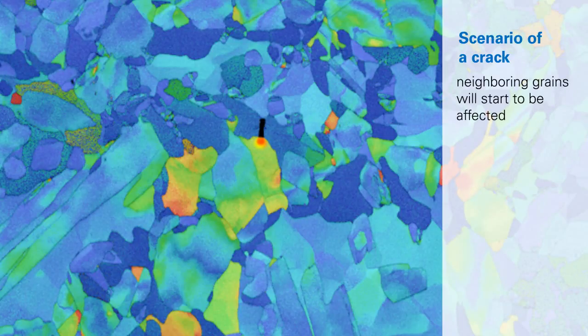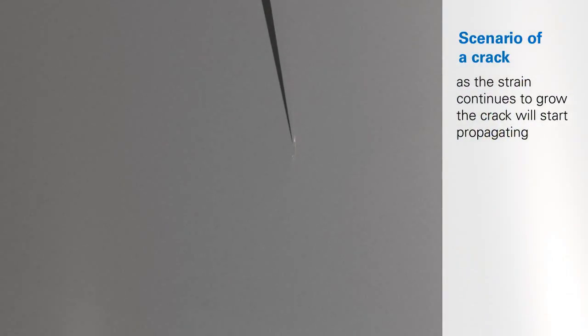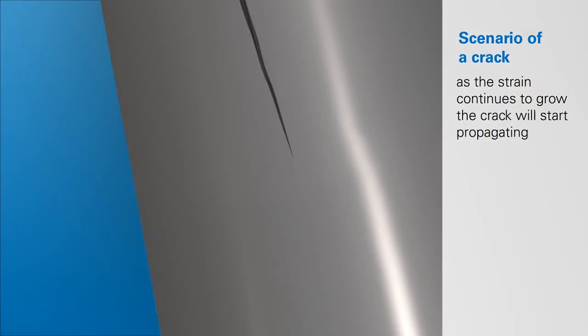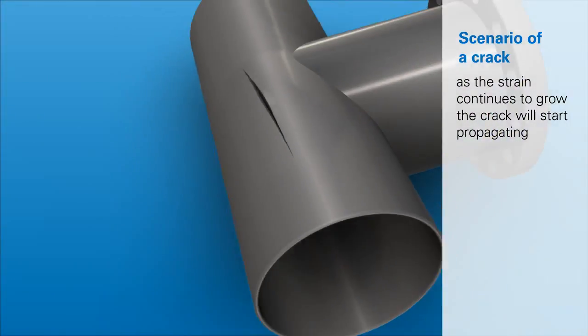Neighboring grains will also start to be affected. As the strain continues to grow, the crack will start propagating.